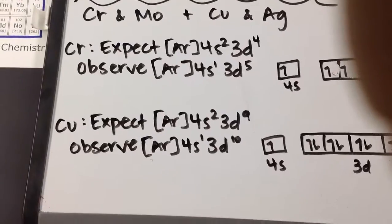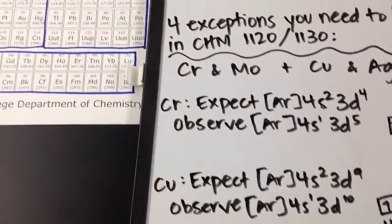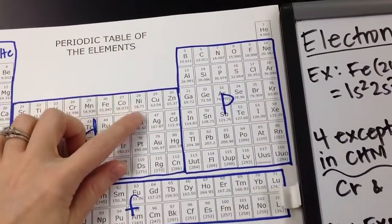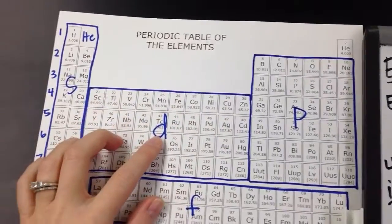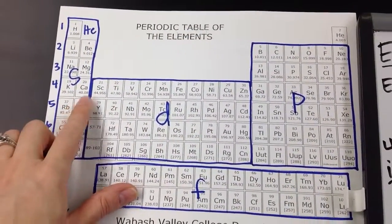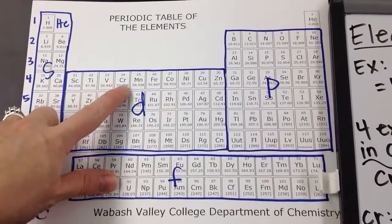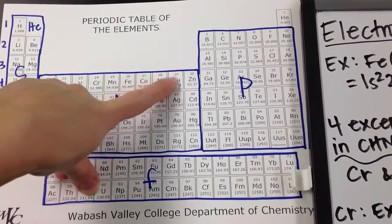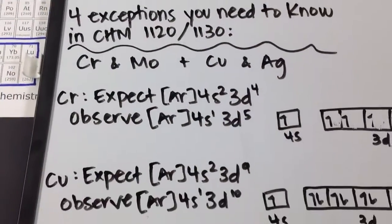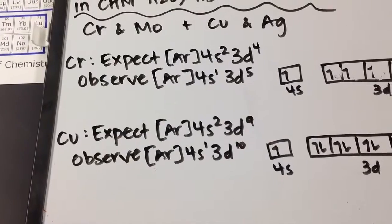Now with copper and silver, so copper and then silver being directly underneath it, you would expect 4S2, 3D 1, 2, 3, 4, 5, 6, 7, 8, 9. Correct? That's what you expect: 4S2, 3D9.